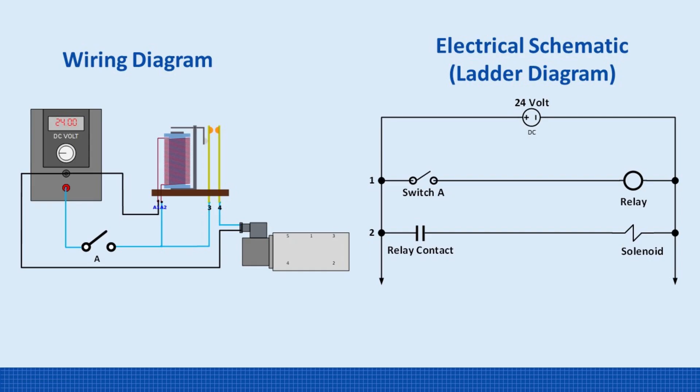Now that we understand how a relay works, let me show you the electrical schematic for this circuit, also called a ladder diagram. It's a simple and standardized way to represent control circuits. It's called a ladder diagram because it looks like a ladder with power lines on the sides and rungs in between.